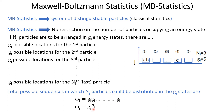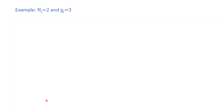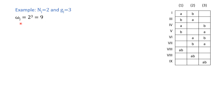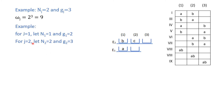For example, if I have two particles and I have to distribute them in three energy states, I will have according to the formula of the Maxwell-Boltzmann statistic nine possible distributions. All those nine possible distributions are shown here — I can put A here and B here, then B here and A there, and so on. Similarly, I can put both particles in any of the energy states.